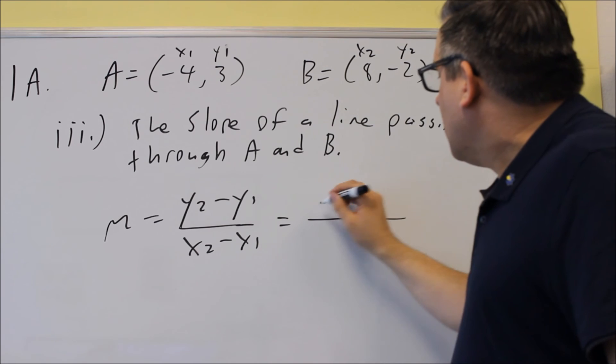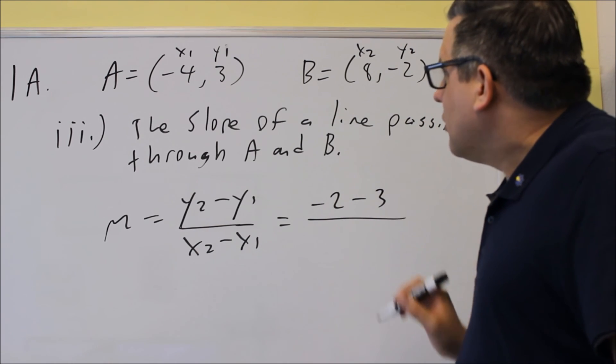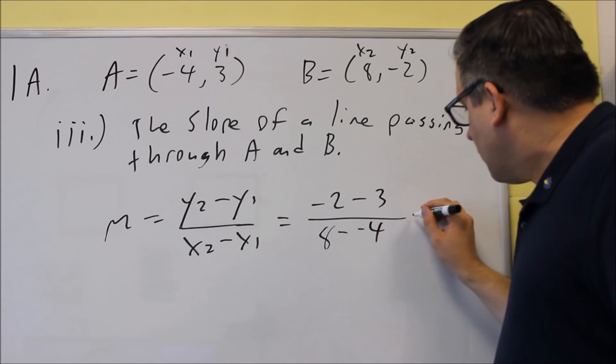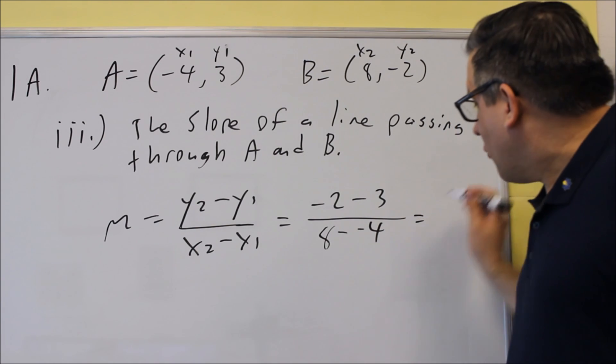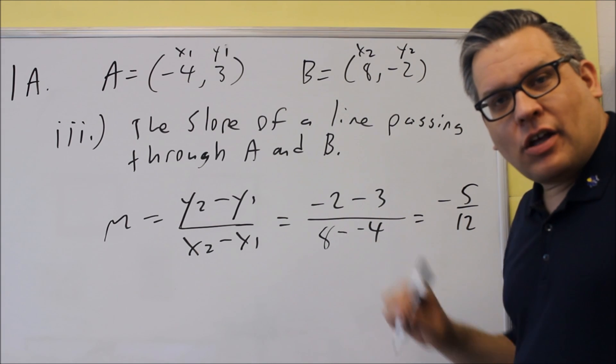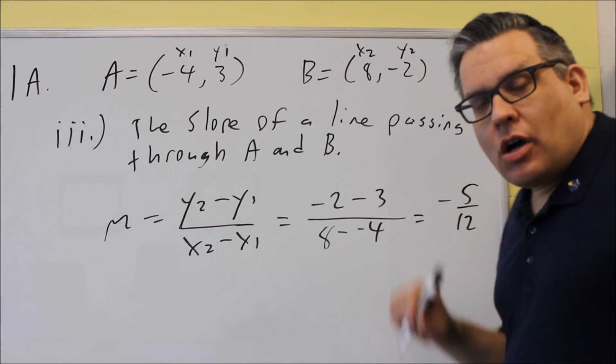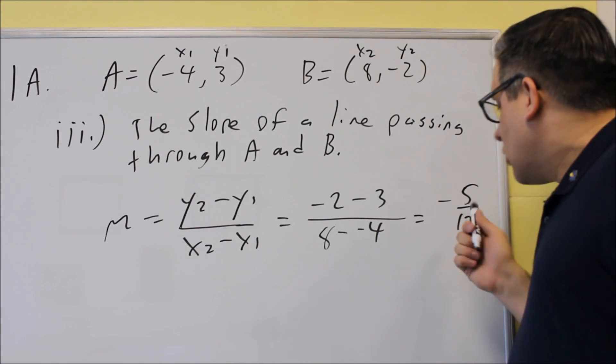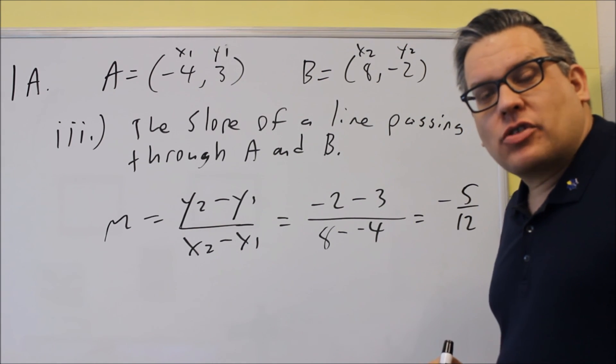So you're going to do negative 2 minus 3 over 8 minus negative 4. And if you simplify that, we get negative 5 over positive 12. And then that would be your answer. So you're just asking for the slope of a line. If we drew a line through A and B, then it would have a slope of negative 5 twelfths.